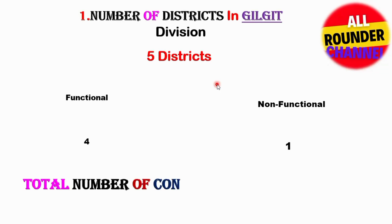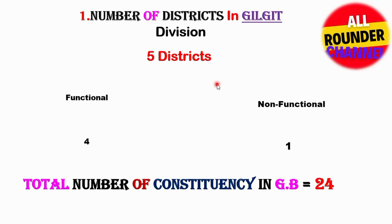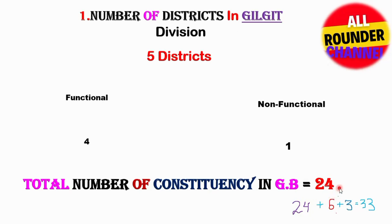Now, total number of constituencies in Gilgit-Baltistan: there are 24 constituencies. The total number of seats in the Gilgit-Baltistan Assembly is 33. Out of 33, 24 seats are elected, 6 are reserved for women, and 3 are reserved for technocrats.